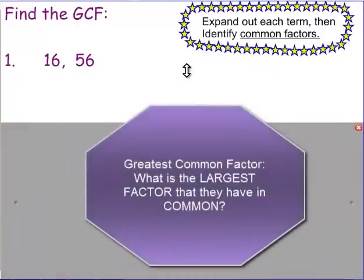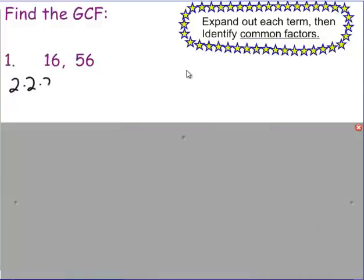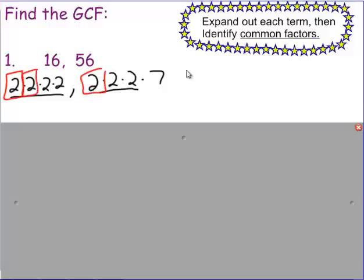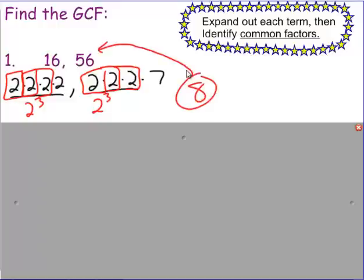If I'm just looking at constants, you might already know the greatest common factor of 16 and 56. If you didn't, you would expand into prime factorization: 2×2×2×2 equals 16, and 2×2×2×7 equals 56. Looking for common factors, I see three 2's in common — that's 2 to the third, which gives me 8 each time. So the greatest common factor of 16 and 56 is 8, because 8 times 2 is 16 and 8 times 7 is 56.